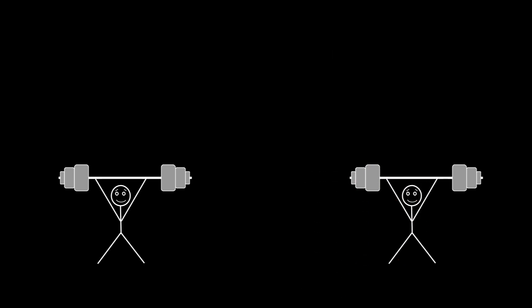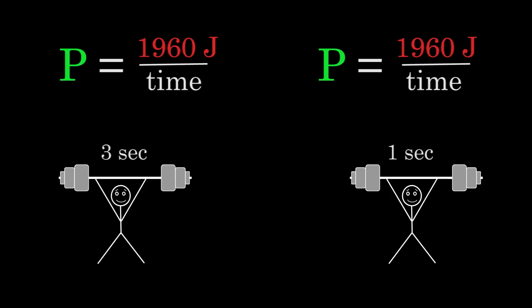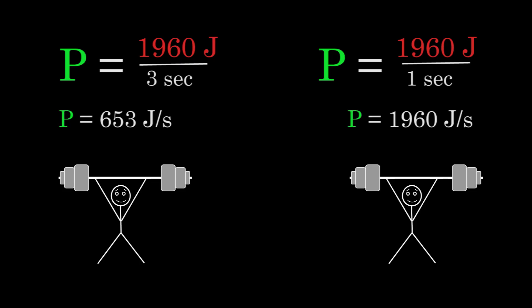To be specific, power is defined as the work done divided by the time that it took to do that work. We already said that both weightlifters are doing 1,960 joules of work. The weightlifter on the right takes 1 second to lift his weights and the weightlifter on the left takes 3 seconds to lift his weights.